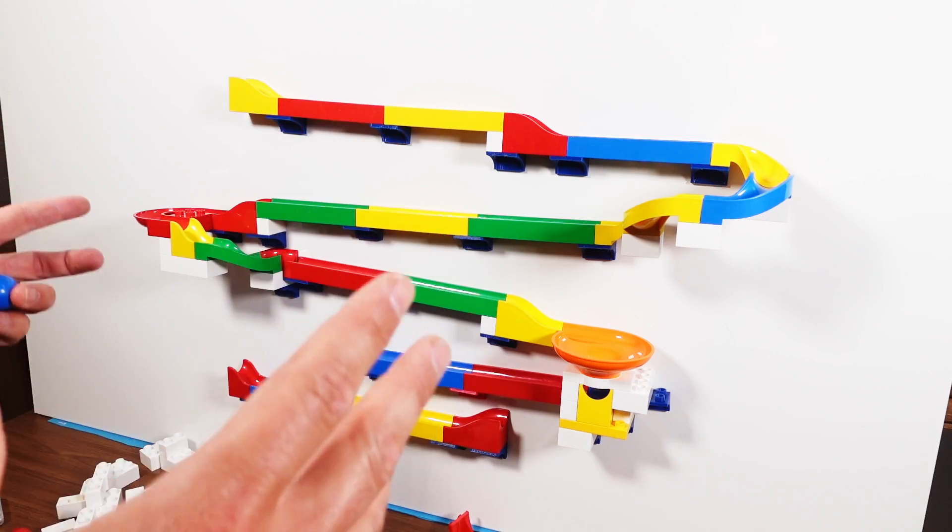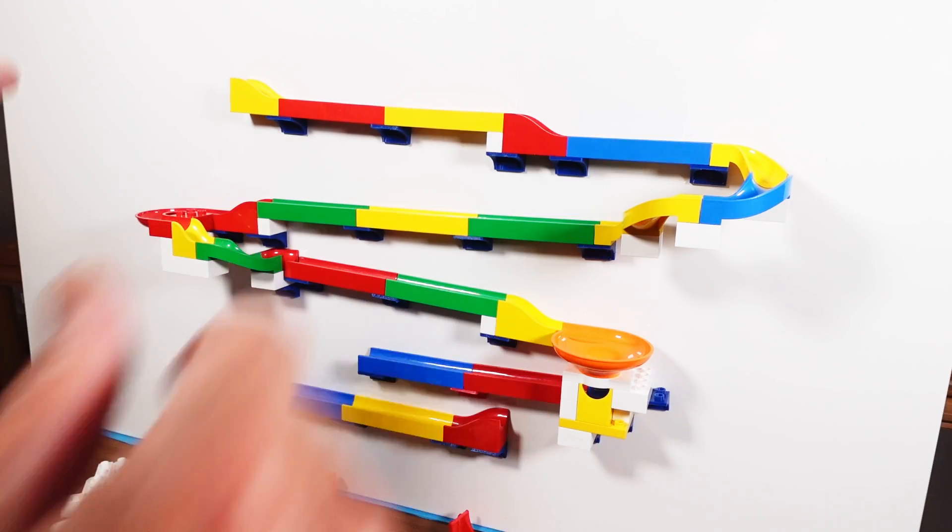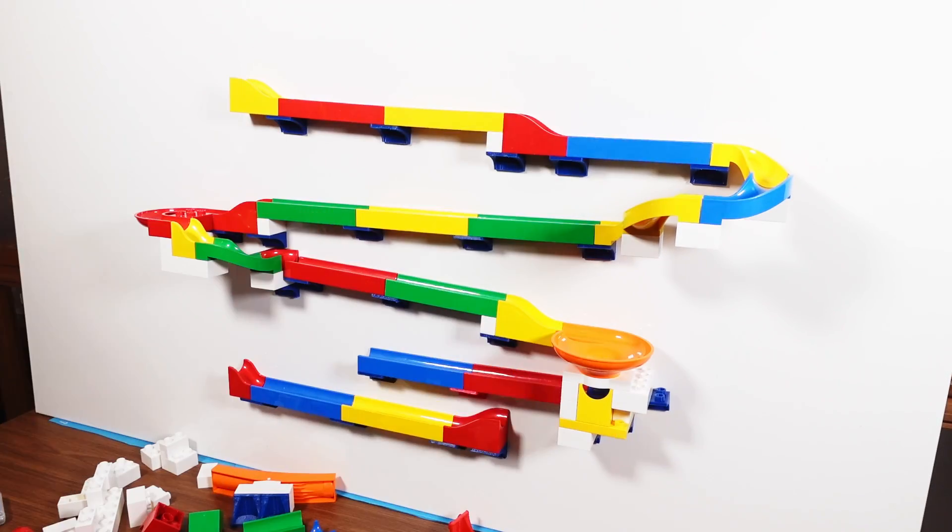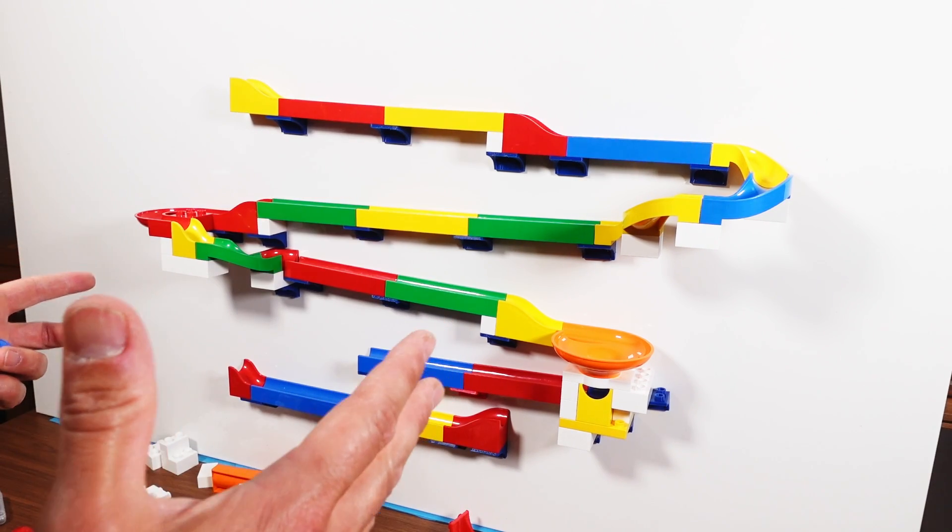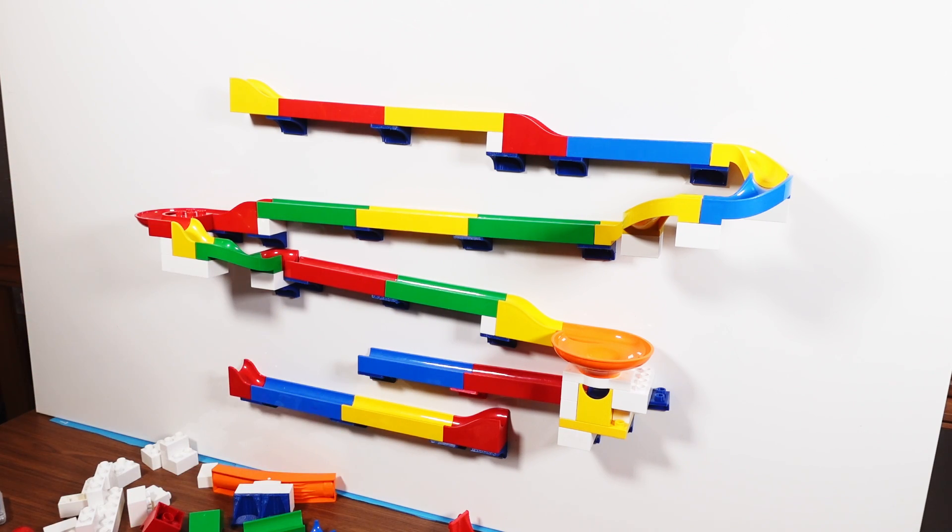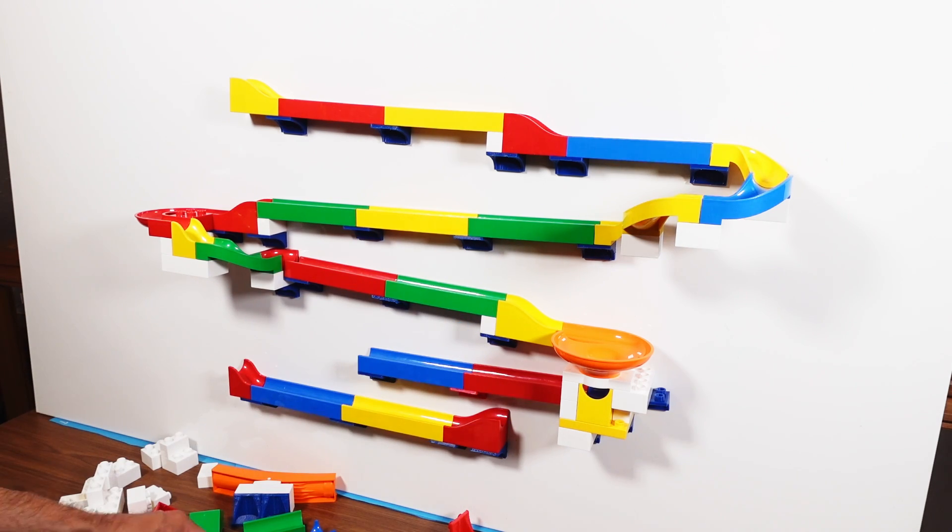This took 10 minutes now to set up this little course. If you want to build up a course that high just using the Hubelino supporting structures with building blocks this is going to take much longer. So this is really a way to speed up Hubelino and you don't need all those building blocks. All you need is a couple of building blocks to connect the pieces and the Hubelino tracks and these holder elements and you're good to go. Let's throw some marbles in.